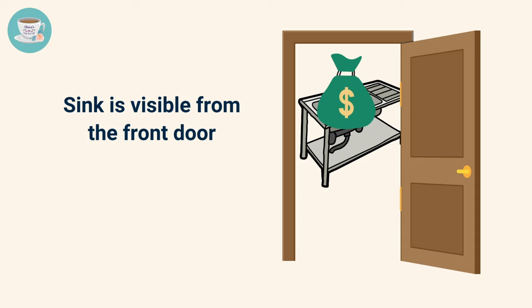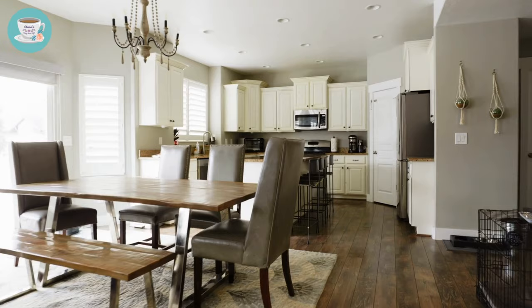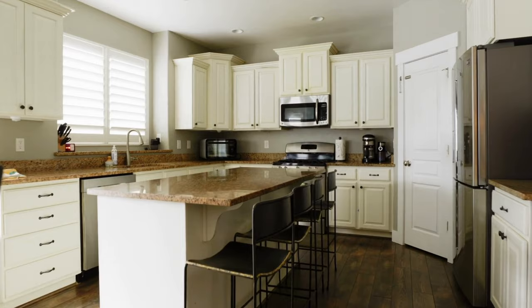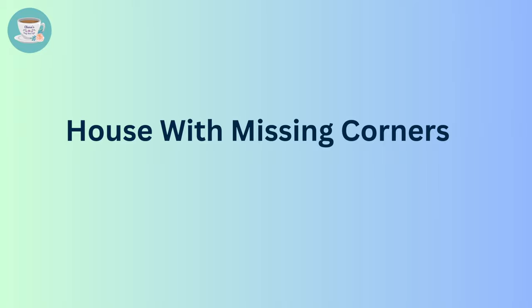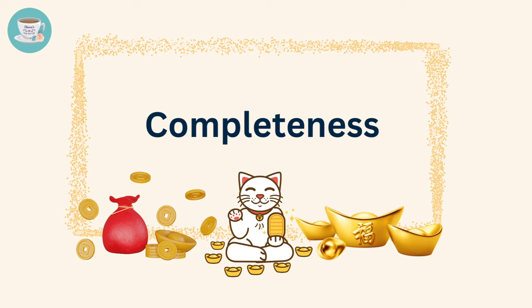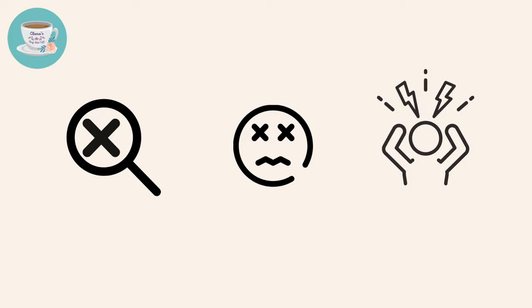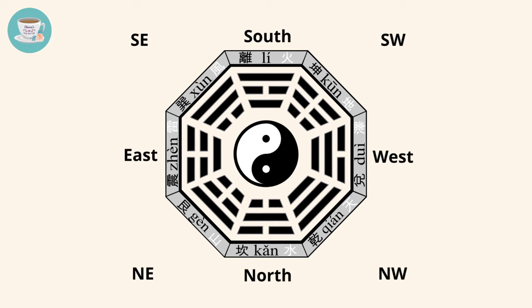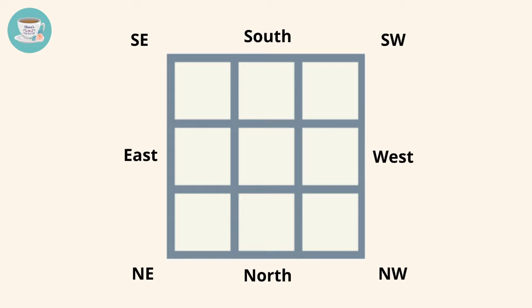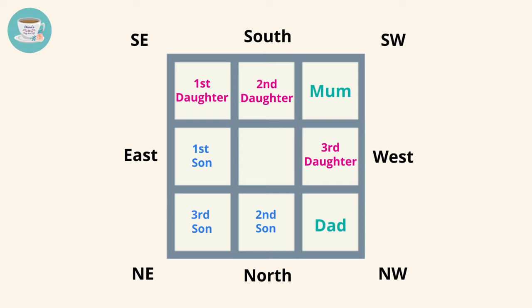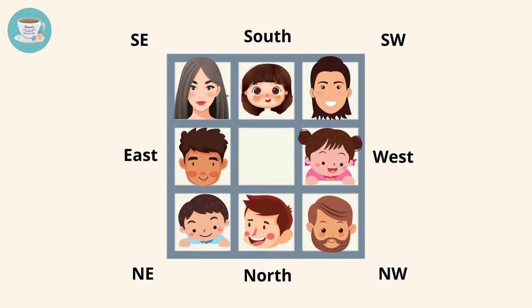If the sink is facing the door, wealth energy can flow directly out of the home through the front door. Therefore, it's important to consider the location of the kitchen and its relationship to the front door when choosing or designing your home. In feng shui, the completeness of a house is considered essential for promoting good fortune and financial prosperity. Houses with missing corners in any direction can have negative impacts on the fortune and luck of the corresponding family members. Therefore, it's essential to ensure that the house is complete and does not have any missing corners.